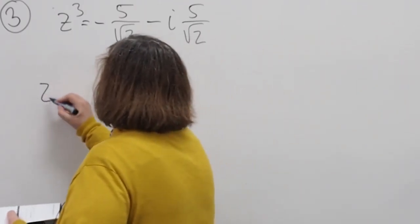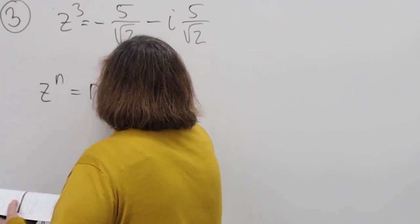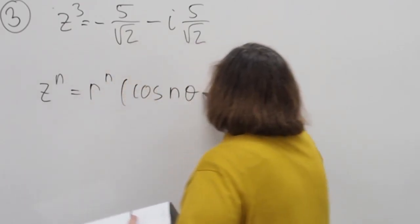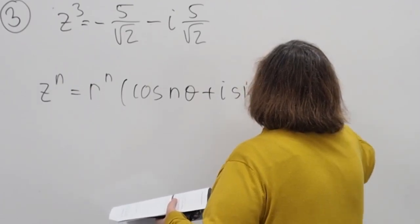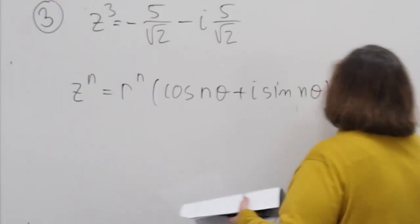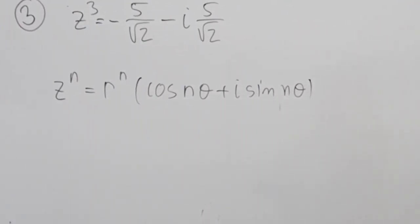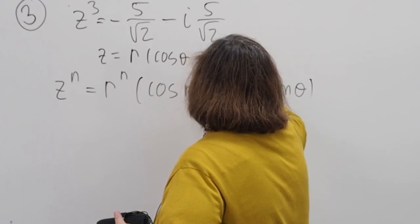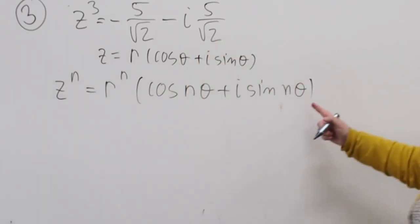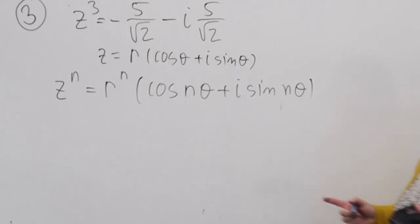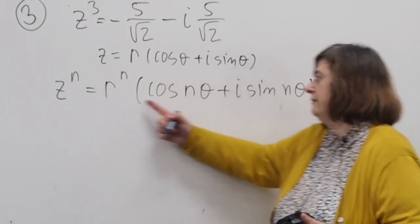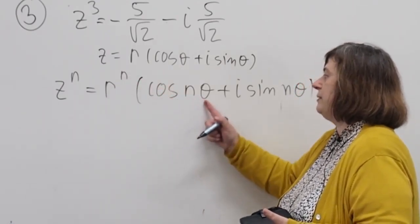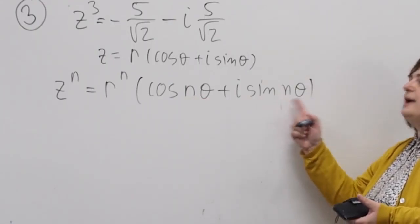We will use de Moivre's theorem, which is in your lecture notes on page 13. The theorem says that if z equals r times (cos θ + i sin θ), then z to the power n equals r to the n times (cos nθ + i sin nθ).